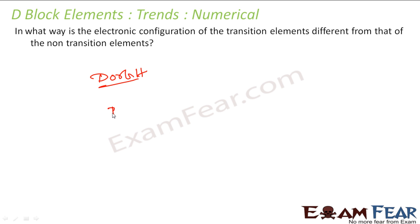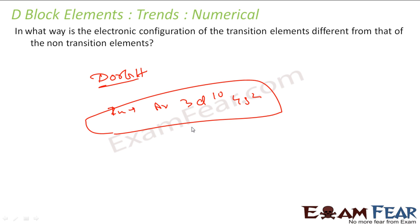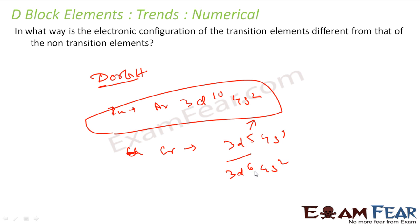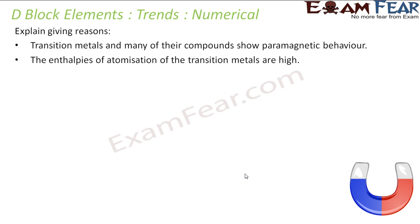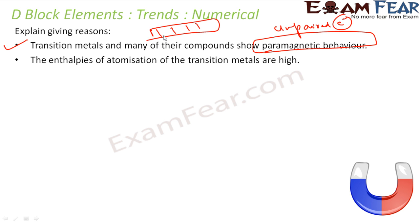In terms of electronic configuration: zinc is [Ar] 3d10 4s2 — the d orbital is completely filled, making it a non-transition metal. In contrast, chromium is [Ar] 3d5 4s1, and iron is [Ar] 3d6 4s2 — both have partially filled d orbitals and are transition metals. Transition metals and many of their compounds show paramagnetic behavior because of unpaired d electrons. Since d orbitals can accommodate 10 electrons and most transition metals have unpaired electrons, they are paramagnetic.